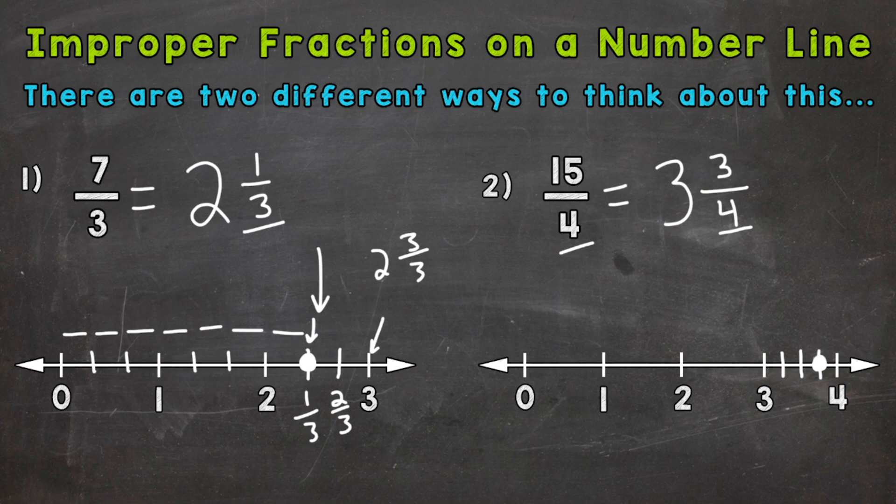Now let's split each section of the number line in between whole numbers into fourths here. And we can do fourths by splitting in half and then splitting the halves in half. That will give you fourths.